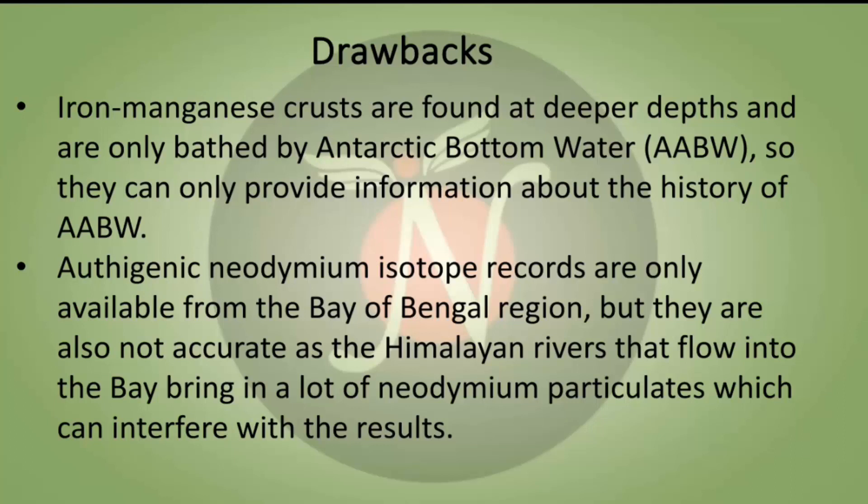Now we will see the drawbacks of the study. The iron-manganese crusts are found at deeper depths and are only bathed by Antarctic bottom water, so they can only provide information about the history of Antarctic bottom water. Additionally, authigenic neodymium isotope records are only available from the Bay of Bengal region, but they are also not accurate because the Himalayan rivers that flow into the Bay of Bengal bring in a lot of neodymium particles, which can interfere with the results.